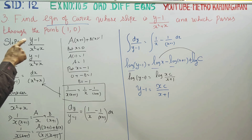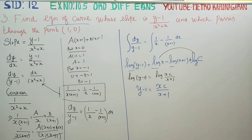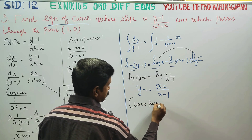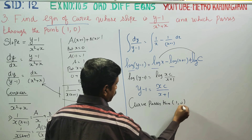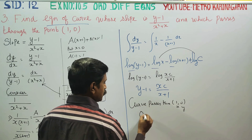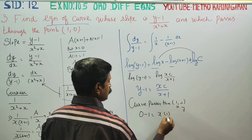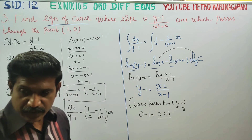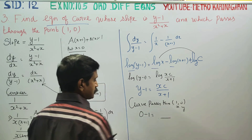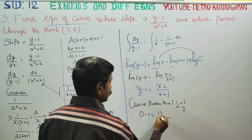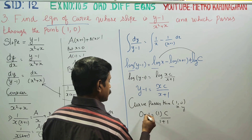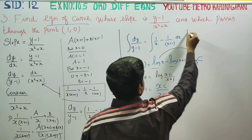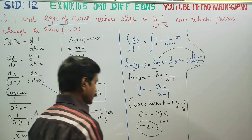The curve passes through (1, 0). Substituting x=1, y=0: (0-1) = C·1/(1+1), so -1 = C/2, therefore C = -2.